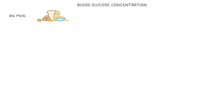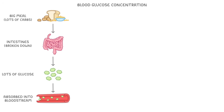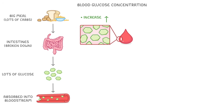If you were to eat a really big meal that had loads of carbohydrates in it, then those carbohydrates would be broken down in your intestines into lots of glucose molecules. These would then be absorbed into your bloodstream, and cause your blood glucose concentration to increase.